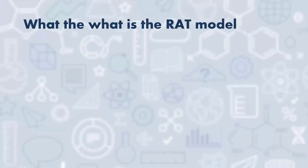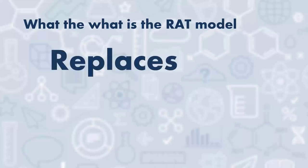What is the RAT model? RAT sounds like the animal, but it's more interesting than that. The first R in RAT stands for 'replaces.' In other words, teachers use technology to replace previous practice, and this can serve as a layer of convenience or cosmetic improvement, but ultimately doesn't fundamentally change the nature of the lesson.